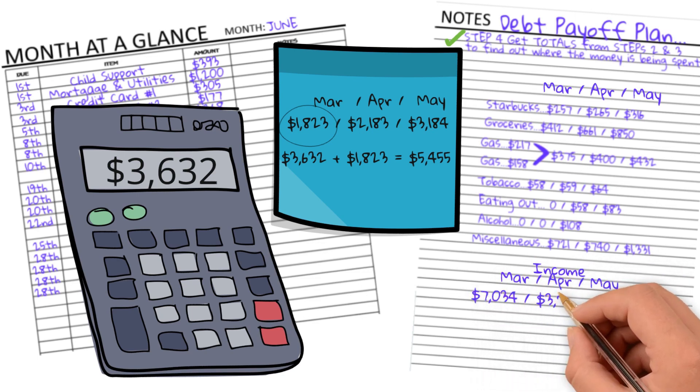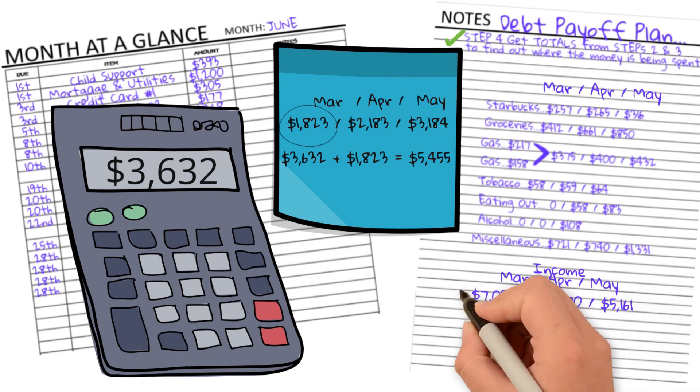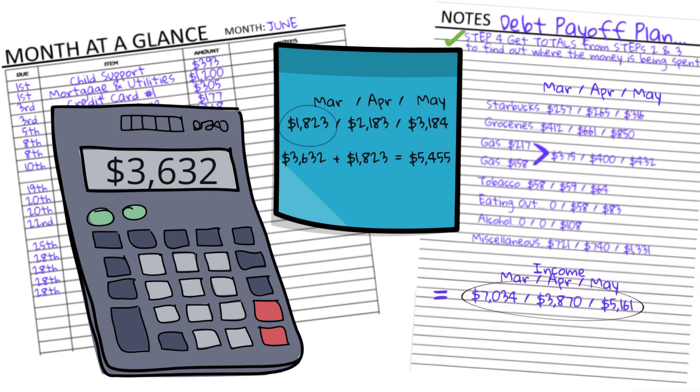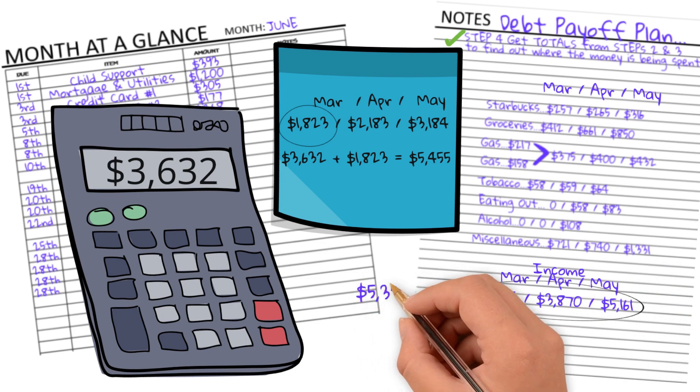So if I total up March, April, and May and get the average, I get $5,355.